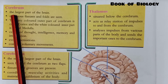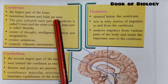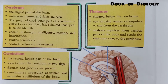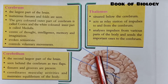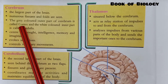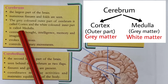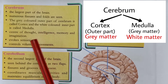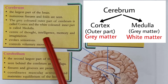The first part of the brain we will study is the cerebrum. The cerebrum is the largest part of the brain. It contains numerous fissures and folds, so the surface is not smooth. The gray-colored outer part of the cerebrum is called the cortex, and the white-colored inner part is called the medulla.